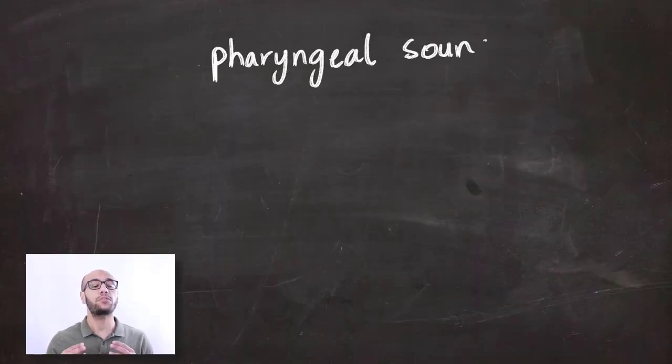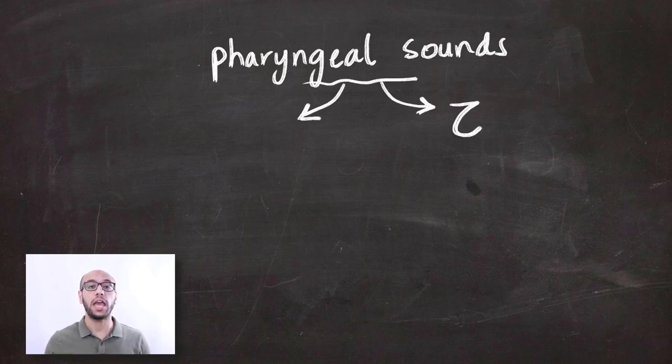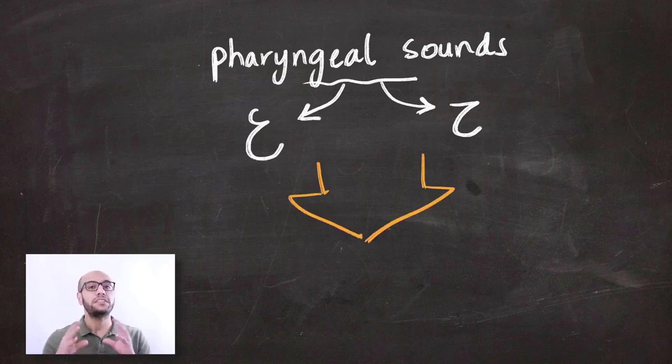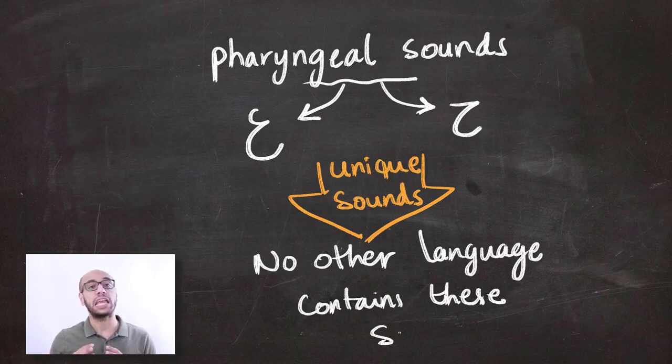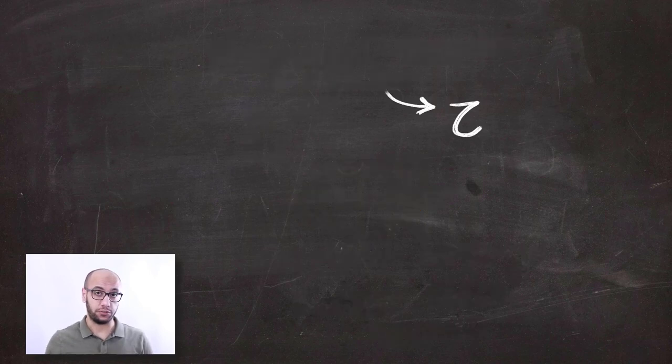Today we're going to talk about the pharyngeal sounds. The pharyngeal sounds come from two Arabic letters. They are the H and Ayn. These two are among the distinctive sounds that make Arabic a unique language, because they're not really found in any other language, with the exception of maybe the Somali language.